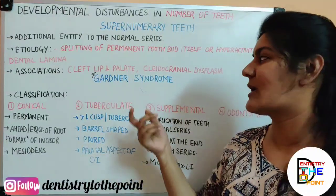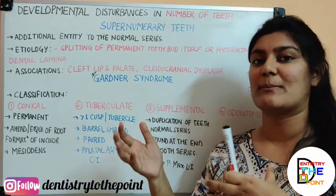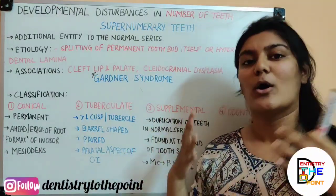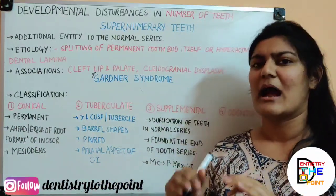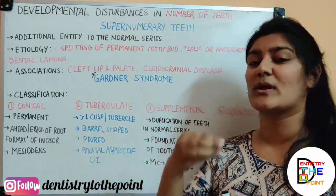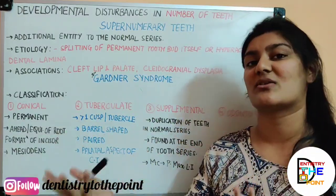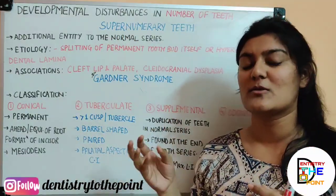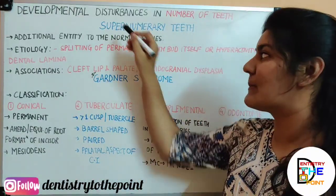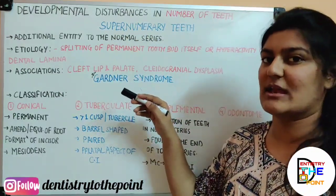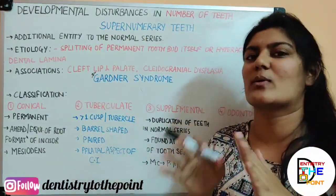A memory trick for Gardner's syndrome: imagine the whole set of teeth as grass. A gardener doesn't just grow grass — a gardener plants extra things like flowers, fruits, and vegetables. Similarly, Gardner's syndrome involves extra teeth growing among the normal set. So remember, the gardener plants supernumerary teeth.